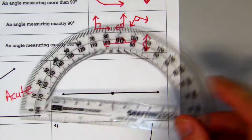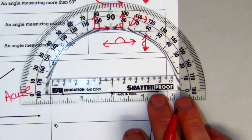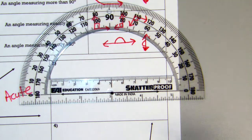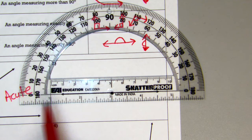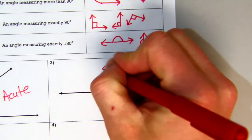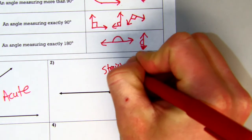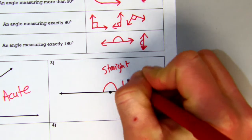Number two, notice how it's a straight line and even when I put it up there, notice how it goes all the way from zero all the way around to 180. So this is a straight angle with 180 degrees.